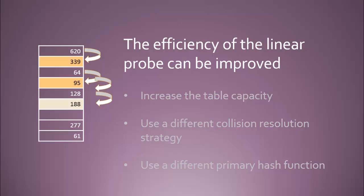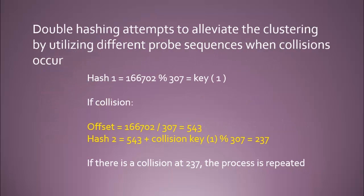We can improve linear probing. The first thing we can do is increase the table capacity — the size of the container — though by doing that we begin to defeat one of the advantages of hashing, so we want to be very careful. If we find that the linear probe is slowing us down and creating a lot of clustering, we could possibly implement a different method of collision resolution, or we could use a different primary hash algorithm. Either one can help improve the clustering and the relative efficiency of the list.